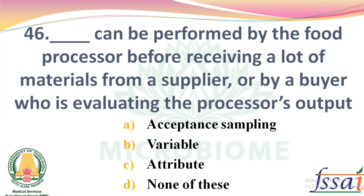Dash can be performed by the food processor before receiving a lot of materials from a supplier, or by a buyer who is evaluating the processor's output. Options: Acceptance sampling, Variable, Attribute, None of these. The right answer: Option A, Acceptance sampling.